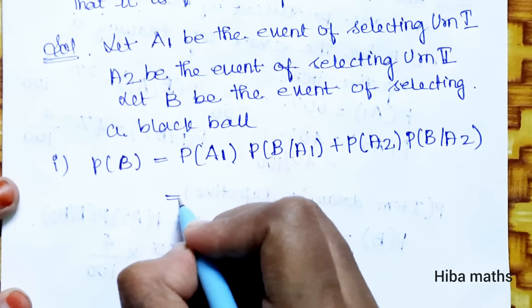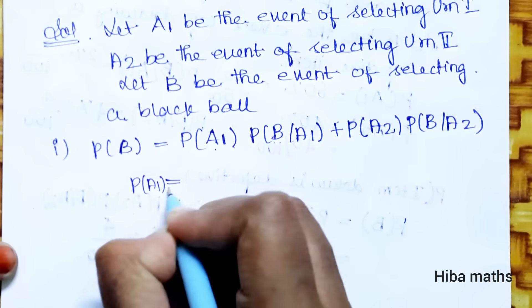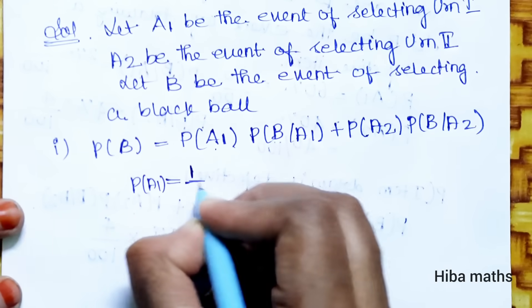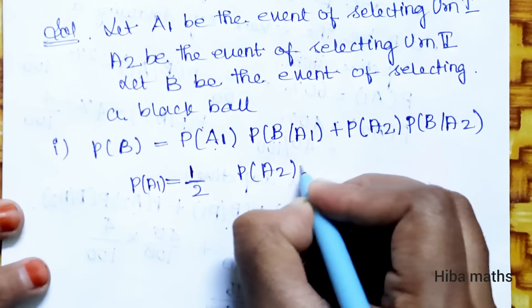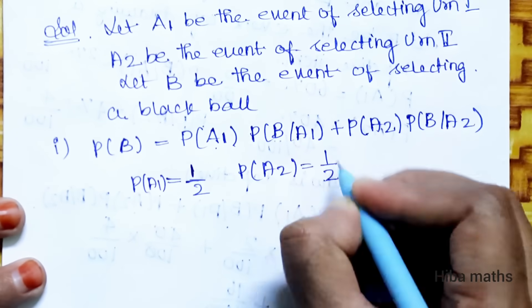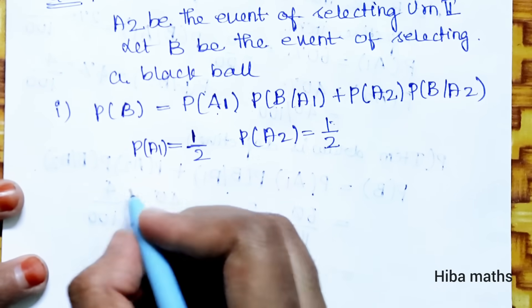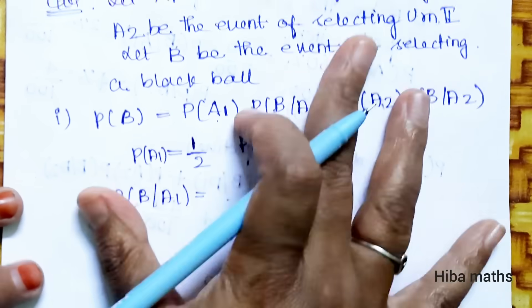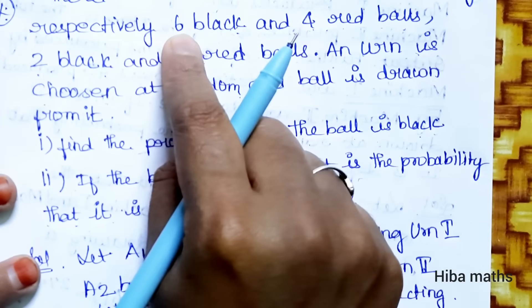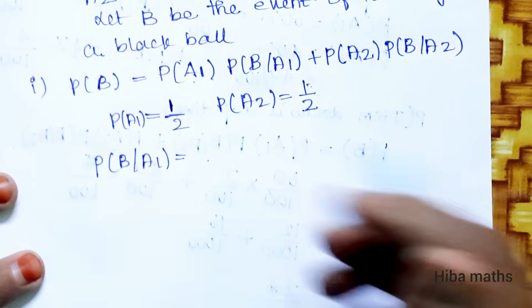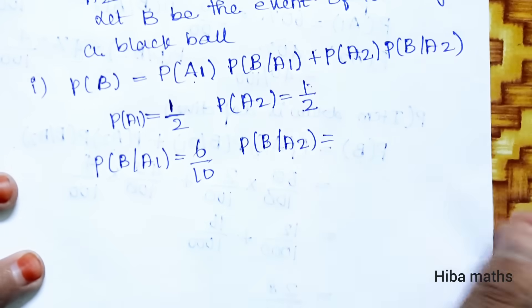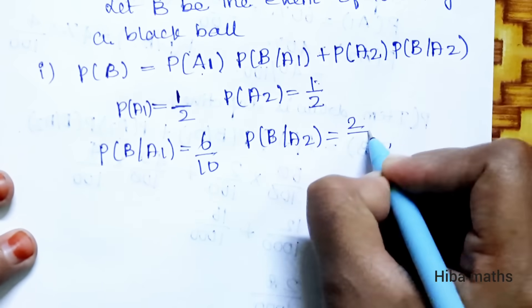P(A1) equals 1/2 and P(A2) equals 1/2. Urn 1 has 6 black out of 10 total balls, so P(B|A1) equals 6/10. Urn 2 has 2 black out of 4 total balls, so P(B|A2) equals 2/4.